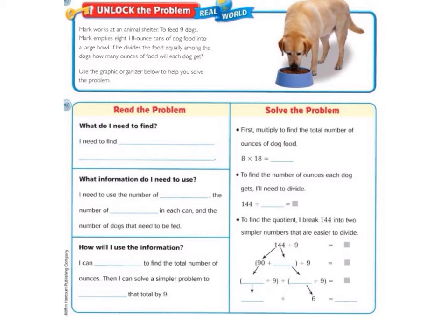Let's take a look at the Unlock the Problem. Mark works at an animal shelter. To feed 9 dogs, Mark empties 8 18-ounce cans of dog food into a large bowl. If he divides the food equally among the dogs, how many ounces of food will each dog get? Use the graphic organizer below to help you solve the problem.